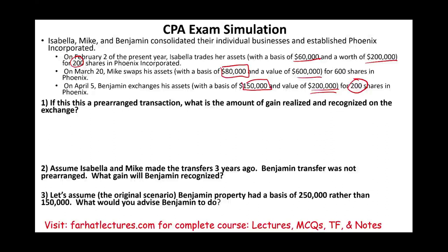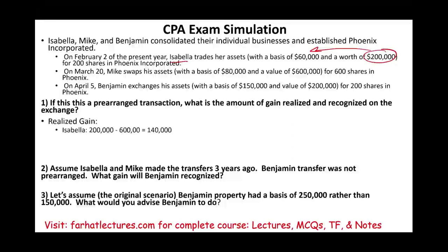Let's compute the realized gain. The realized gain is how much you would have realized if you sold the asset. Isabella has an asset worth $200,000 with a basis of $60,000, so she would have realized $140,000. Mike would have realized $600,000 minus $80,000, equal to $520,000. And Benjamin would have realized $50,000, which is $200,000 minus $150,000.